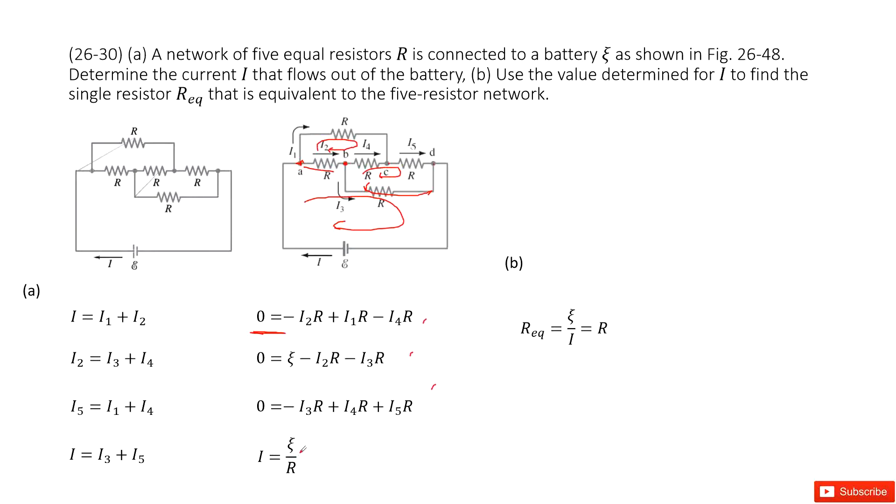Next one, use the value determined for I to find the single resistor equivalent resistance R_eq that is equivalent to the five resistor network. So easy, right? As we talked about, equivalent resistance can be epsilon, this is the battery's voltage, divided by the current we just found. And then you use epsilon divided by epsilon over R, you find it is just equal to R.